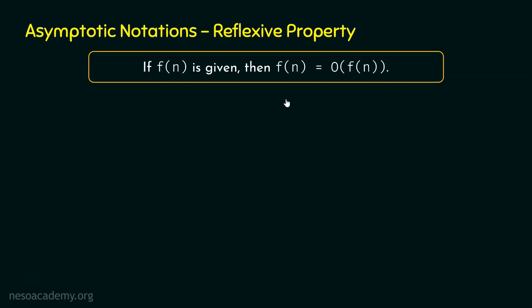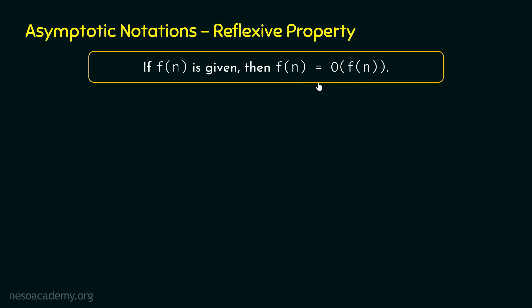This is the reflexive property: if F(n) is given, then F(n) is Big O of F(n). This means if F(n) is given to us, we can say F(n) is asymptotically bigger than F(n) or it can be equal to F(n). If we have F(n) on both sides, they are asymptotically equal. But it might also be possible that F(n) can grow asymptotically bigger than F(n), because we can always multiply F(n) by some positive constant to make it grow asymptotically bigger. So it is possible that F(n) can grow asymptotically bigger than F(n).